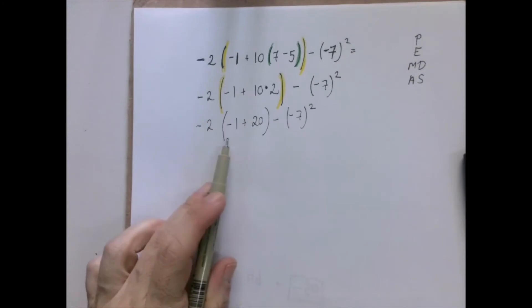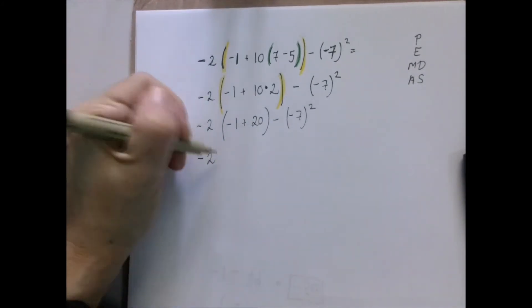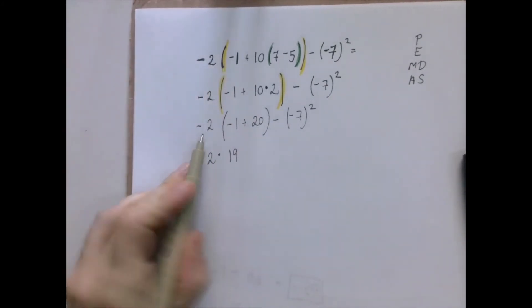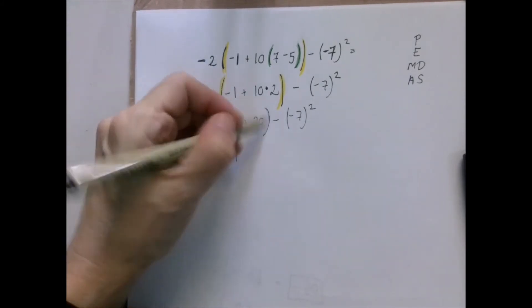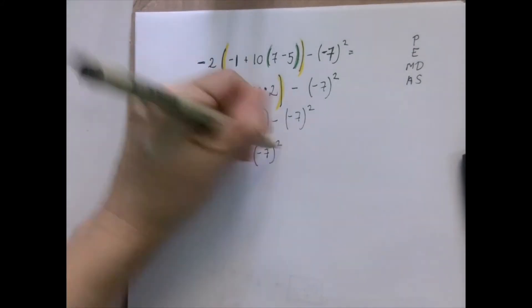And still the parentheses forces us to work inside. Negative 1 plus 20 is 19. And again, between negative 2 and the expression within the parentheses, there is nothing indicating multiplication.